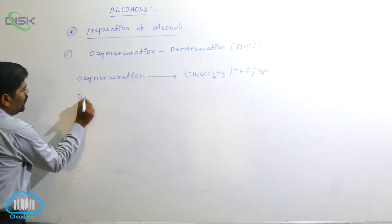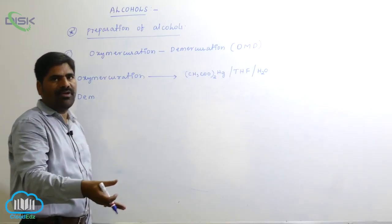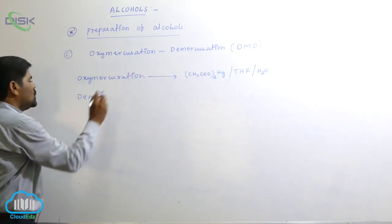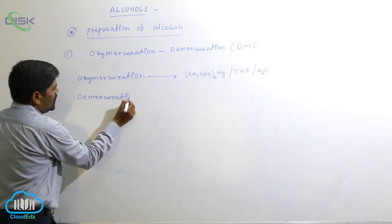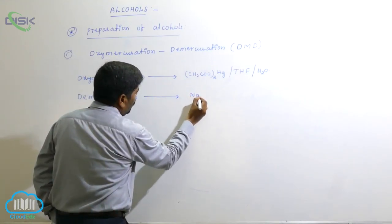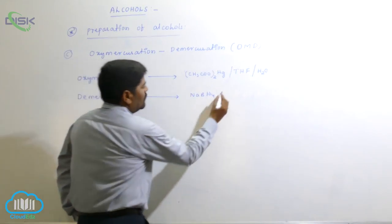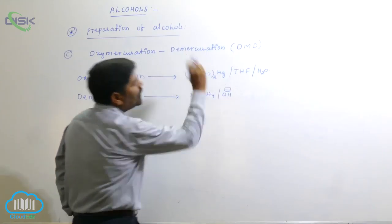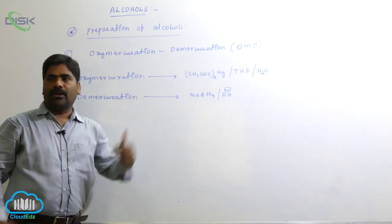The second step is demercuration — mercury is removed from the substrate molecule and hydrogen is added. The reagent for demercuration is sodium borohydride (NaBH4), which is a reducing agent dissolving in base OH⁻.